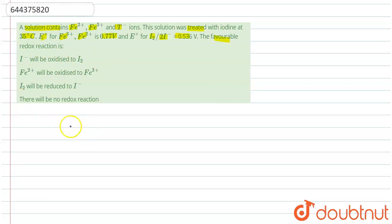So a solution is containing Fe2+, Fe3+, and I-. Later the solution was treated with iodine at 35 degrees Celsius.